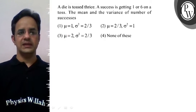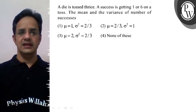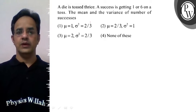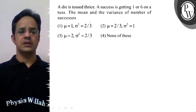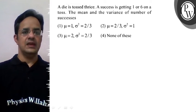Hello, the problem is that a die is tossed thrice and a success is getting 1 or 6 on the toss. The mean and the variance of the number of successes is asked.